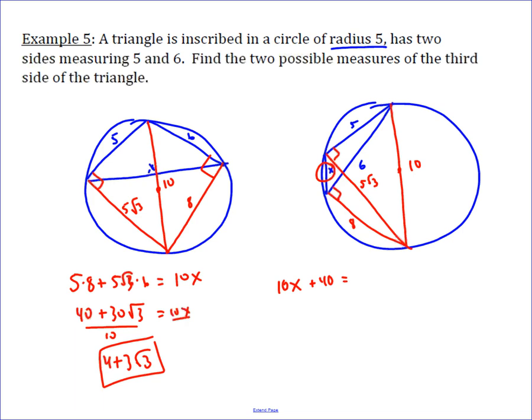well, the diagonals are 6 and 5 root 3, so 30 root 3, that gives you 10x equals 30 root 3 minus 40.